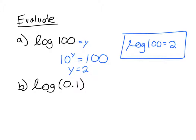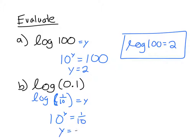What about the log of 0.1? Well, that's the same thing as the log of 1 over 10 — 0.1 is 1 over 10. So if I set that equal to y, I would say base 10 to the y is 1 over 10. Well, if y is negative 1, then you'll get 1 over 10. So the log of 0.1 equals negative 1, and that's your answer.